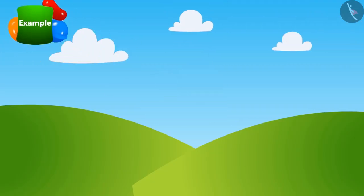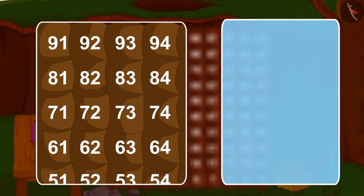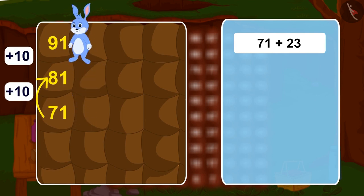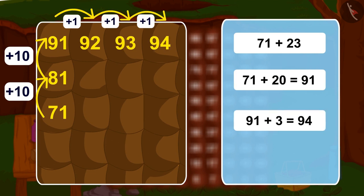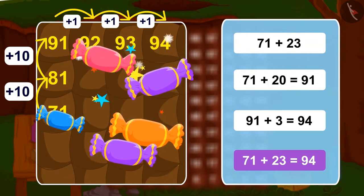Children, can you solve this riddle by using the rooms of Bunny's house? How many jumps will he have to take this time? Yes, we will first take two long jumps and reach 20 steps ahead to reach 91, and then three steps further ahead. 23 steps more than 71, we will reach 94. In this way, adding 23 to 71 would give us 94.